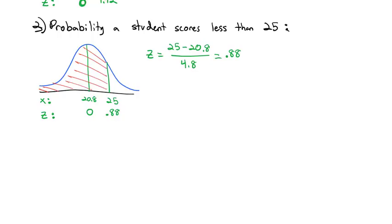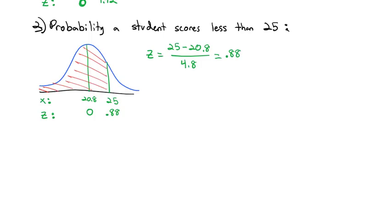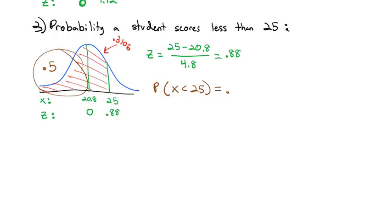We look up 0.88 in the table: going down and across, we find a probability of 0.3106. That 0.3106 is the area between the mean and z = 0.88. But this time we also want the whole area to the left side, which we know is 0.5. So the probability that x is less than 25 is 0.5 plus 0.3106, giving us 0.8106. Just over 81% of students score less than 25 on the ACT.